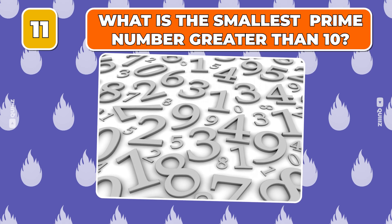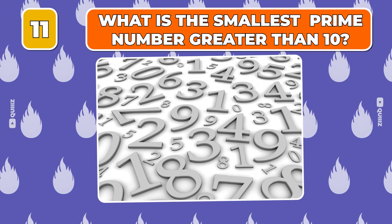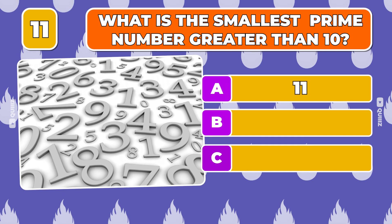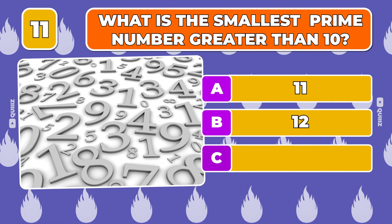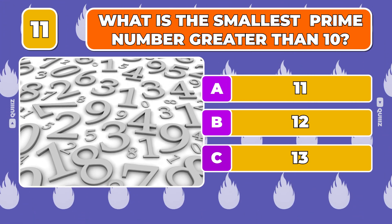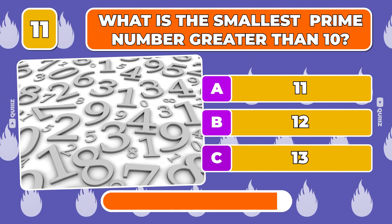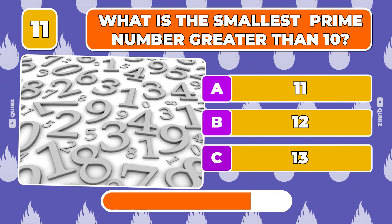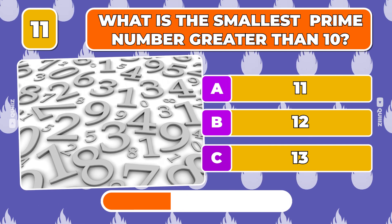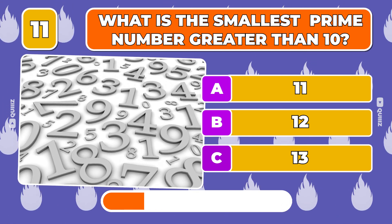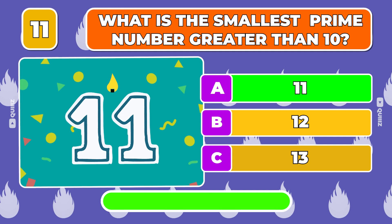Question 11. What is the smallest prime number greater than 10? 11, 12, 13. Correct, it's 11.